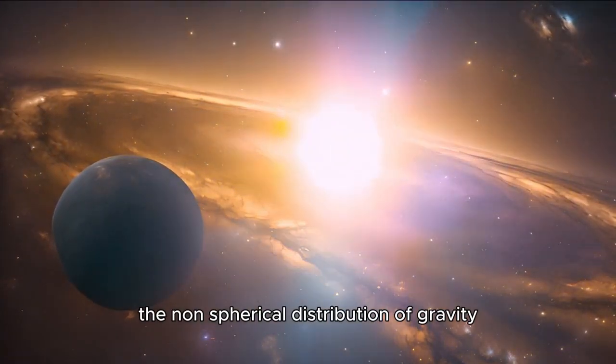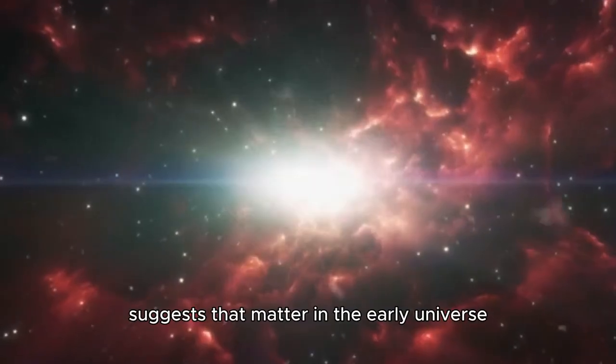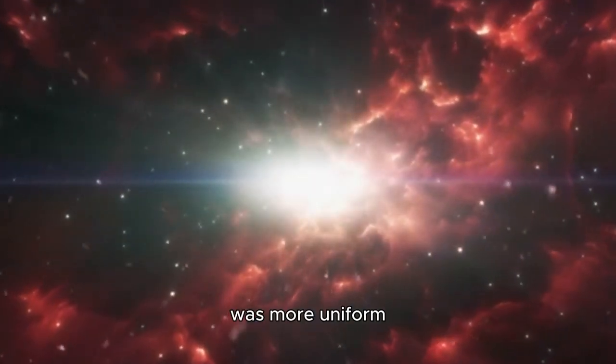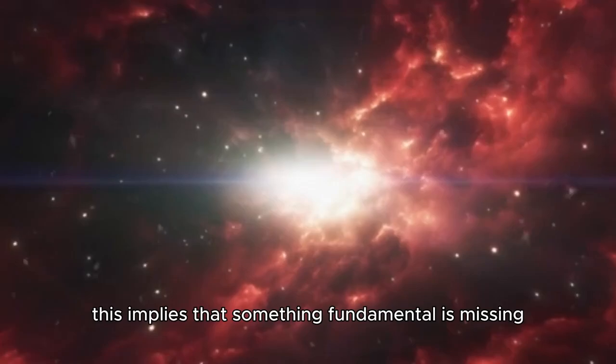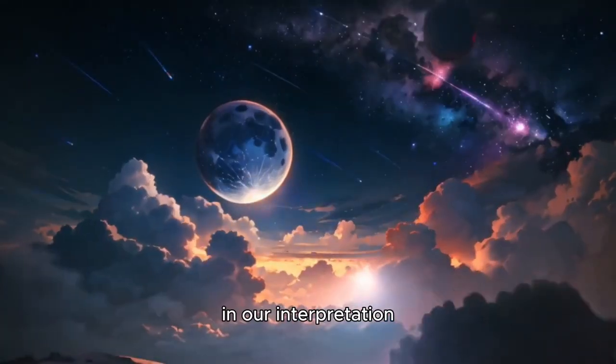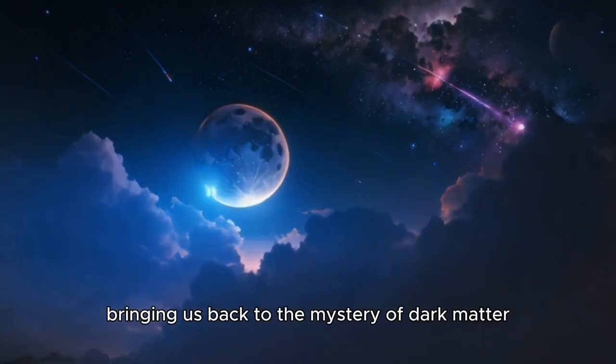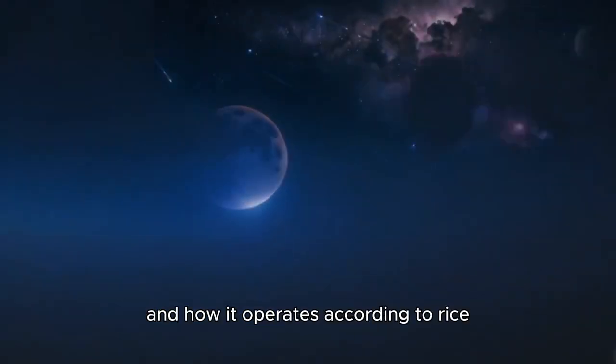The non-spherical distribution of gravity suggests that matter in the early universe was more uniform than what is observed through gravitational lensing. This implies that something fundamental is missing in our interpretation, bringing us back to the mystery of dark matter and how it operates.